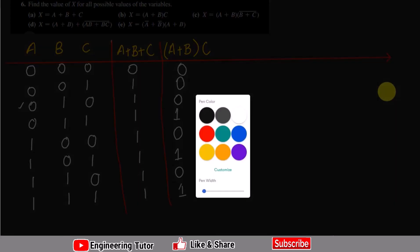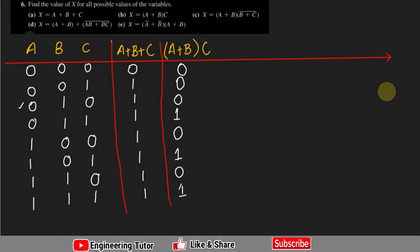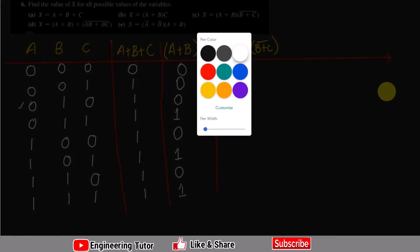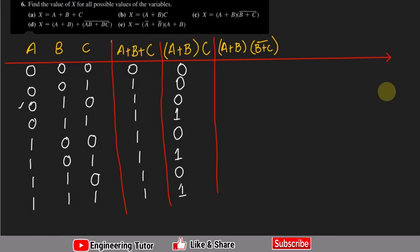Now part C is (a plus b) multiplied by (b plus c) prime. For a=0, b=0, c=0: a+b is 0, b+c is 0, prime of 0 is 1, so 0 multiplied by 1 is 0. For a=0, b=0, c=1: a+b is 0, b+c is 1, prime of 1 is 0, so 0 multiplied by 0 is 0.